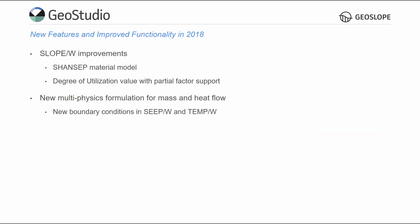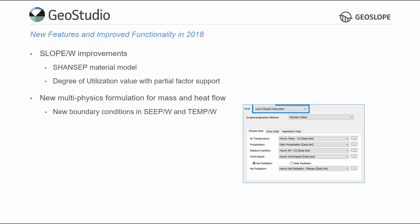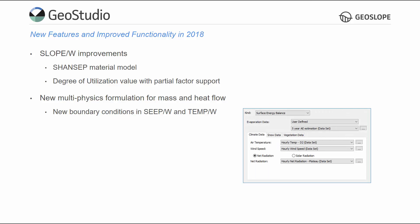Consequently, new boundary conditions are available in SEEP-W and TEMP-W to simulate atmospheric coupling. In SEEP-W, the land-climate interaction boundary condition simulates water transfers at the surface given climate and vegetation data, while energy exchange over the ground surface is now simulated by the surface-energy balance boundary condition in TEMP-W.